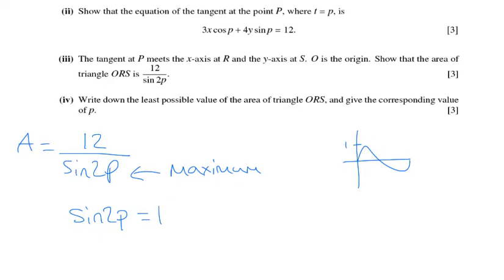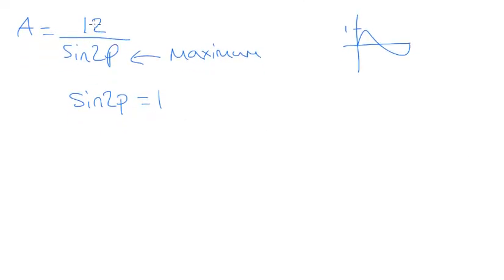That straight away tells us the maximum area. The maximum area is 12 divided by 1. Sorry, the minimum area. The minimum area is 12 over that maximum value of sine 2P, which is 1. So the minimum area is 12.